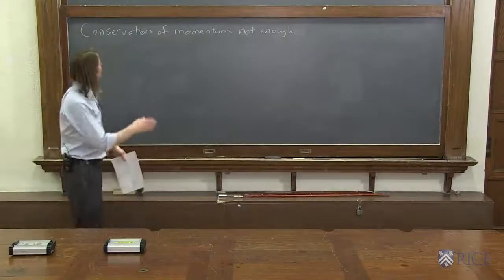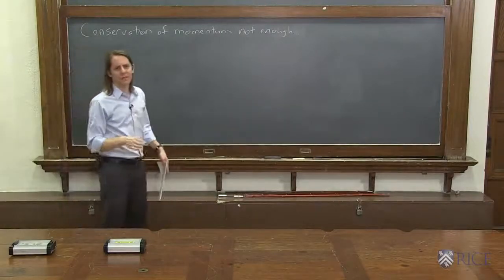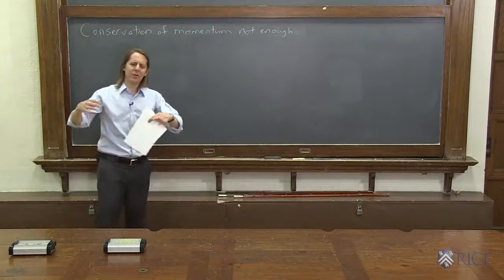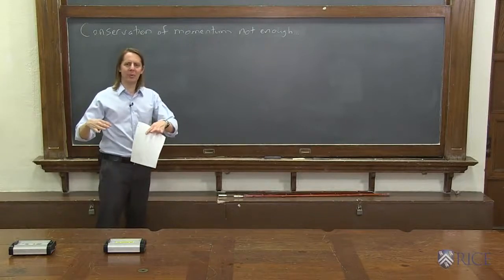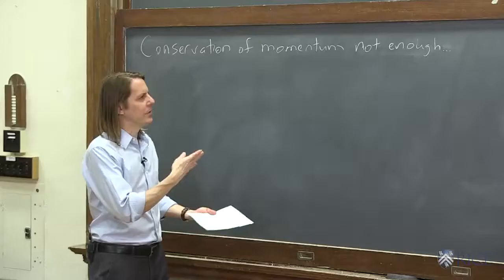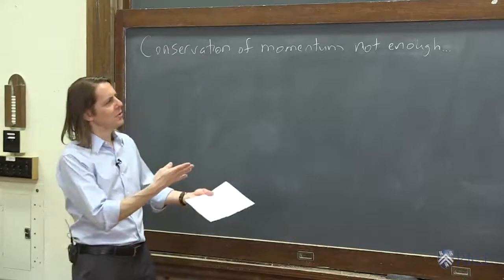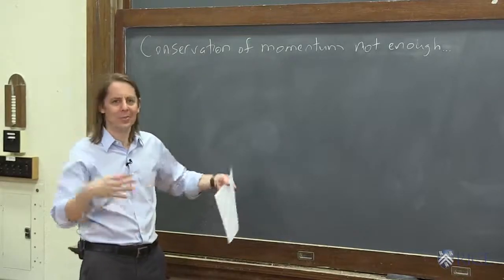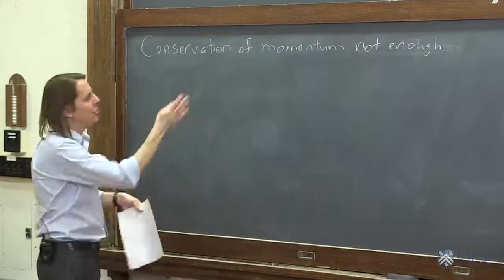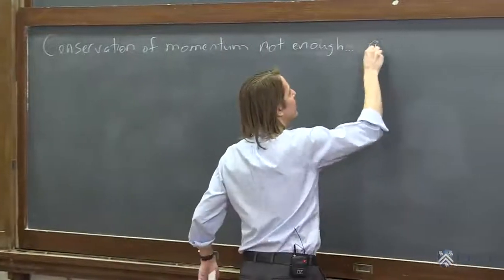In the previous board, we found that conservation of momentum isn't quite enough. We could think of a lot of scenarios when two things collide that would conserve momentum, and only one scenario is going to happen. The universe is deterministic at this scale. It's only one thing's going to happen. So clearly, we need more information. We also need conservation of energy.